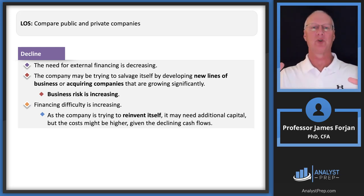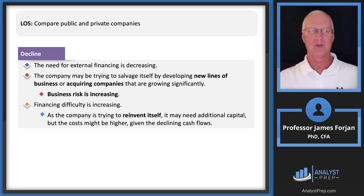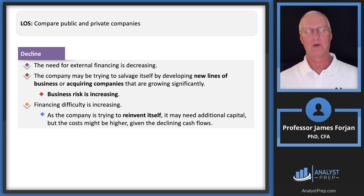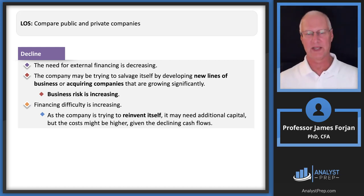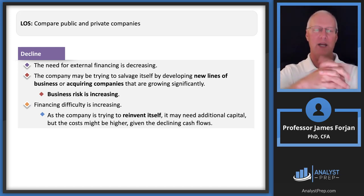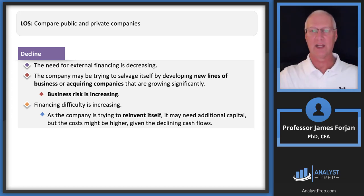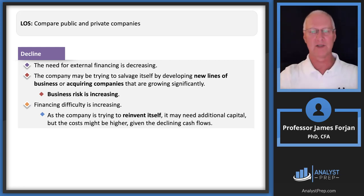When a company becomes mature and bloated, it faces attack from competition and enters some kind of decline. That means looking elsewhere — new product lines, acquiring other companies — and business risk starts increasing. Notice at the bottom: reinvent itself. So the lifecycle goes: tiny, grow, shrink, and hopefully reinvent. An executive leadership team and board of directors should make that decline period as brief as possible.